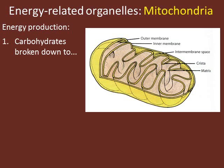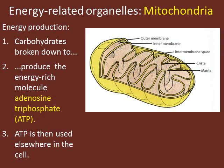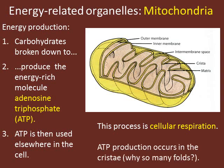Energy production occurs when carbohydrates — specifically glucose — are broken down to produce the energy-rich molecule ATP. That glucose makes it to the mitochondria inside each of our cells to be broken down and produce ATP, which can then be used elsewhere in the cell to power biological reactions. This process is referred to as cellular respiration, and it requires oxygen. ATP production actually happens on the cristae, which is why that inner membrane is highly folded — more surface area means more ATP production per unit time.